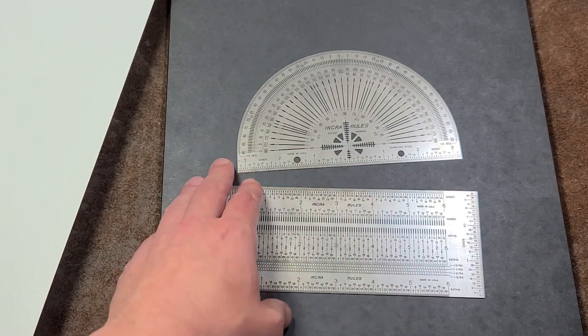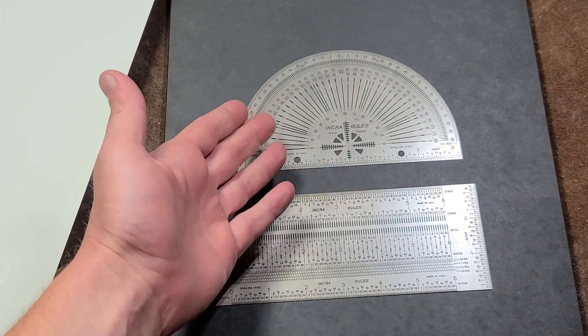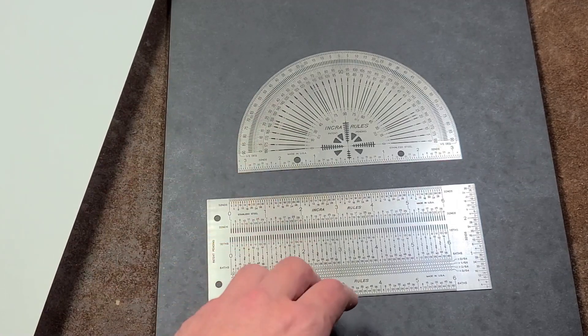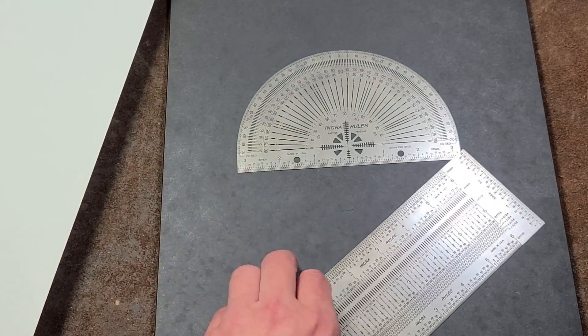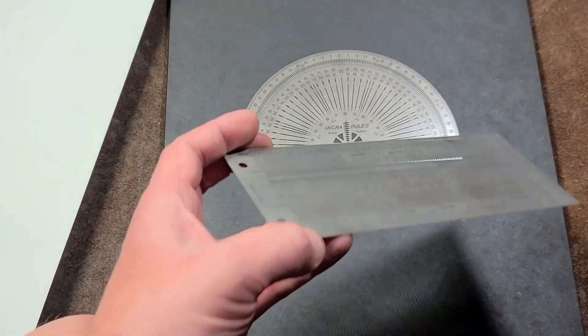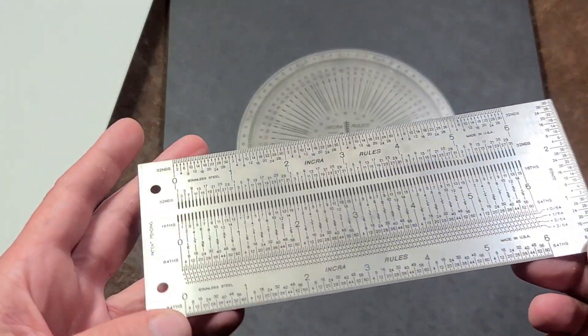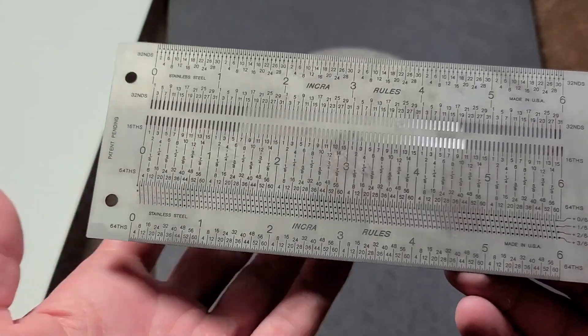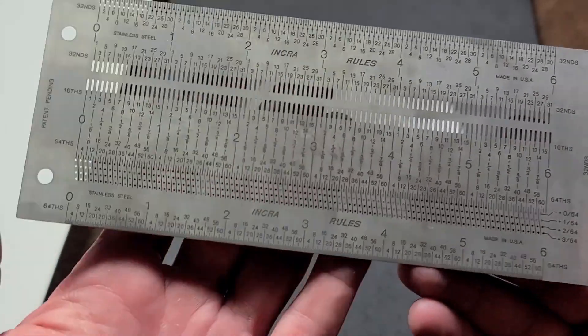Cactus Maximus here, this time with a review of the Incra protractor and six-inch rule. What makes these kind of interesting is that they have a pretty good reputation, although I've been reading online that some of the newer ones are not quite as nice as these older used ones I found. These are stainless steel super precision rulers.